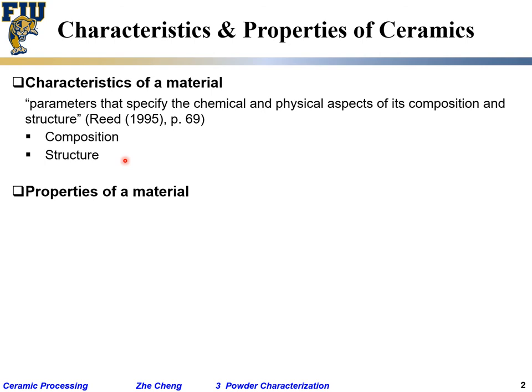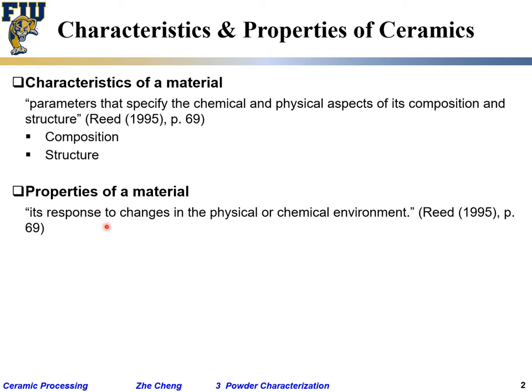Properties of a material means something different — it means the material's response to changes in physical or chemical environment. Properties quite often refer to thermal properties, mechanical properties, chemical properties, or electrical properties.